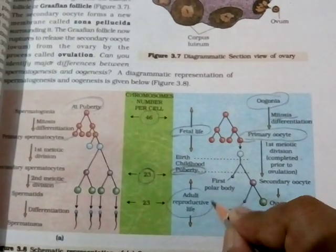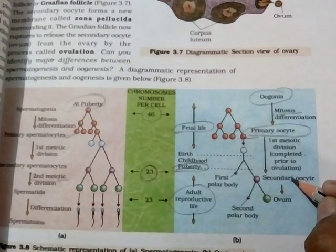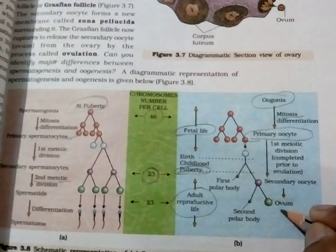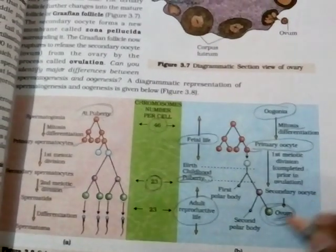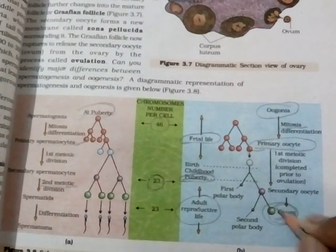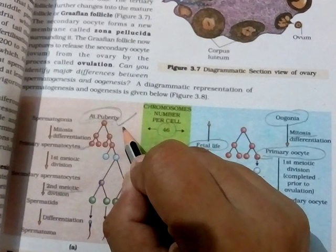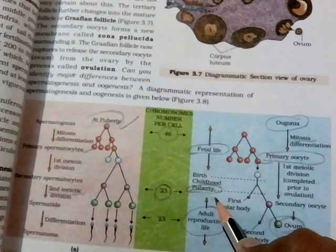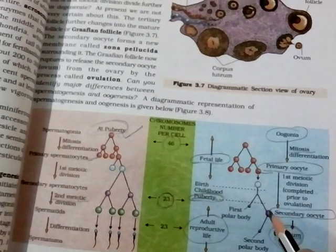When the female body's reproductive life starts, in each month each ovary produces and releases one ovum after the puberty stage. This is the basic difference: in the male body the spermatogenesis process starts at puberty, while in the female body at puberty the secondary oocyte matures — that is the basic difference.